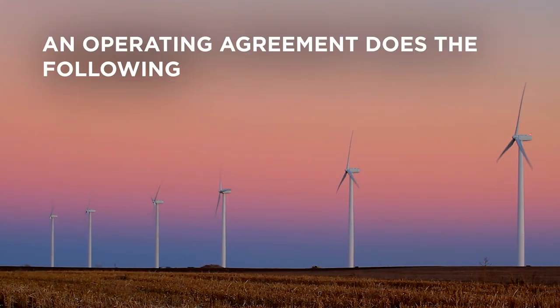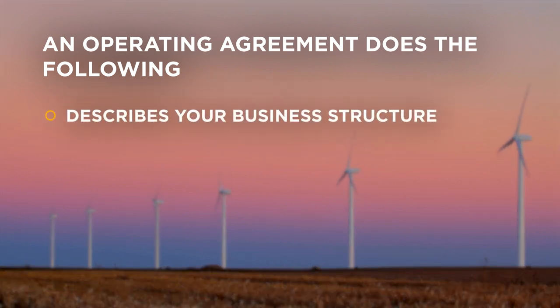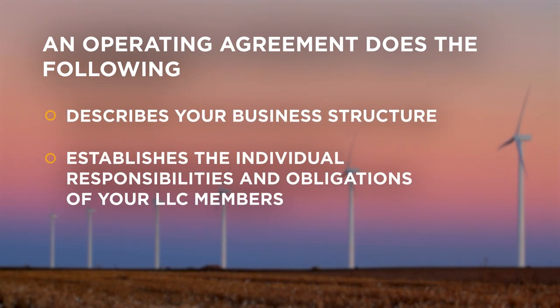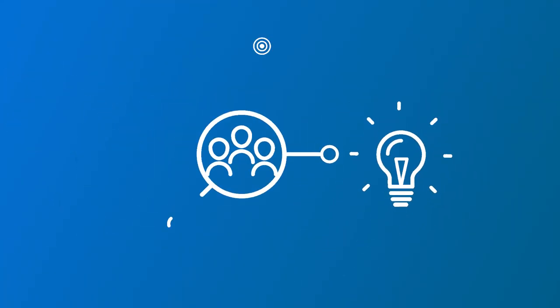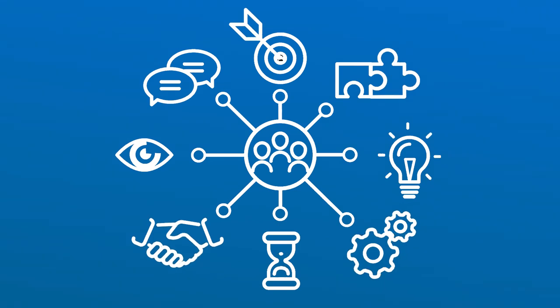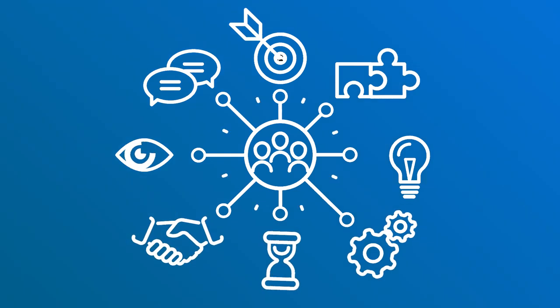Next is to create an operating agreement. An operating agreement describes your business structure, establishes the individual responsibilities and obligations of your LLC members, and details how the LLC will be run. Although Kansas doesn't require one, an operating agreement clarifies the specific duties of its members, which may help your LLC avoid significant legal and operational difficulties.